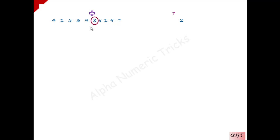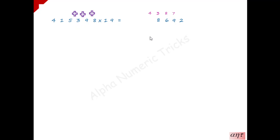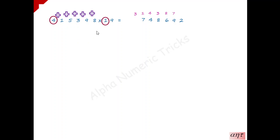Now we will see how to multiply a 6-digit number by 19. 9 into 8 is 72 — 2 is written, 7 is carry forward. 9 into 9 is 81, 81 plus immediate right 8 is 89 — 9 is written, 8 is carry forward. 9 into 3 is 27, 27 plus 9 is 36 — 6 is written, 3 is carry forward. 9 into 5 is 45, 45 plus 3 carry forward is 48 — 8 is written, 4 is carry forward. 9 into 1 is 9, 9 plus 5 is 14 — 4 is written, 1 is carry forward. 9 into 4 is 36, 36 plus 1 is 37 — 7 is written, 3 is carry forward. Don't forget to multiply 1 by the last number in the multiplicand, 4.